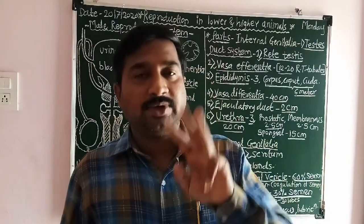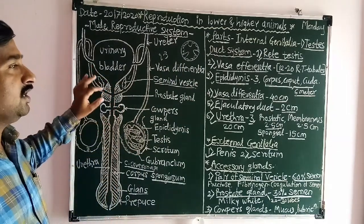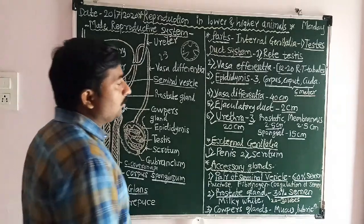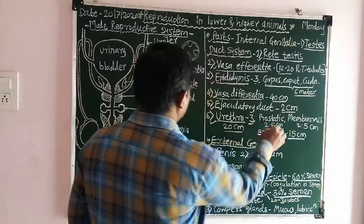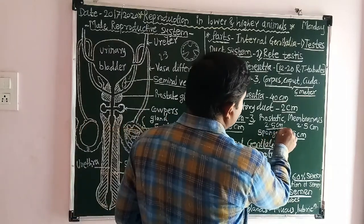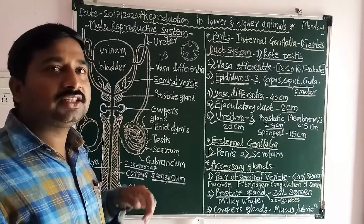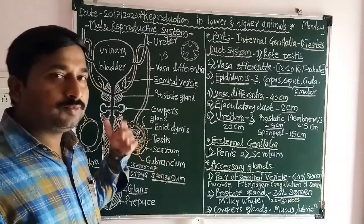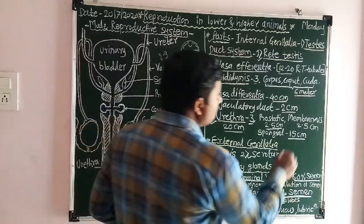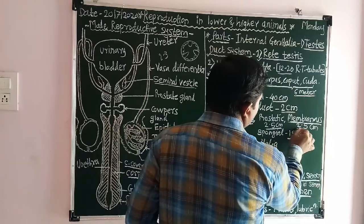The urethra is divided into three parts. The first part is covered by the prostate gland and is about 2.5 centimeters in length, into which the prostate gland opens separately to ejaculate prostatic fluid.